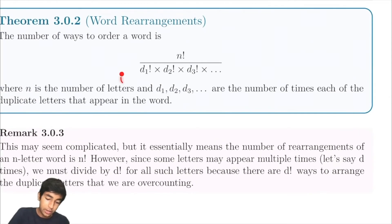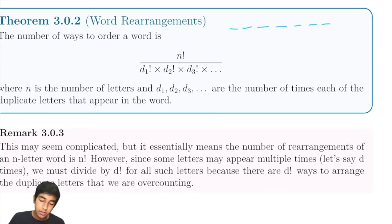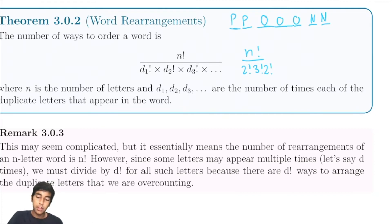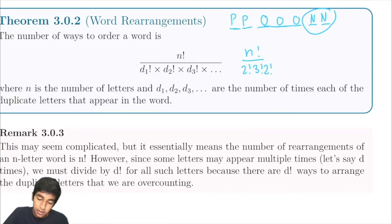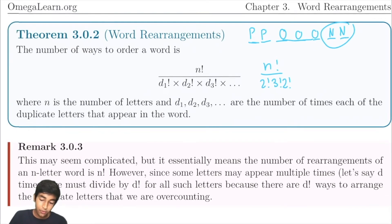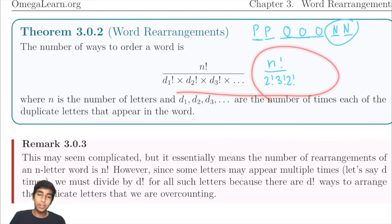In general, this is the formula for word rearrangements. If we have N letters in our word, the number of possible rearrangements is N factorial. Then for duplicates — say two P's, three O's, and two N's — we divide by two factorial for the P's, three factorial for the O's, and two factorial for the N's. For duplicates, we divide by the count of that duplicate factorial, because the number of ways to arrange them if they were different is that factorial, but since they're not different, we divide by it.